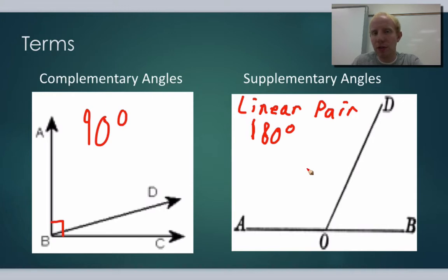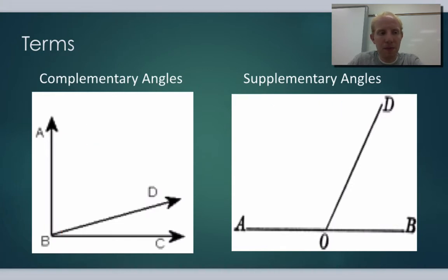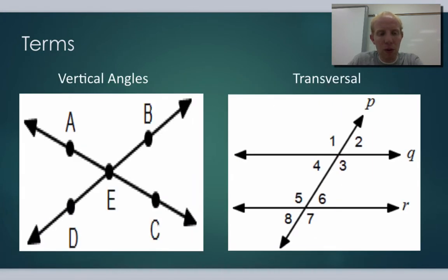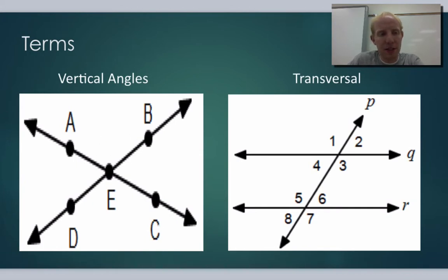Hopefully that's a review from a previous math class. Now let's look at some other things we want to know when doing these types of proofs. We're looking specifically at how lines and angles interact, and how two lines or multiple lines can intersect.